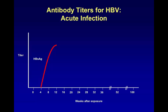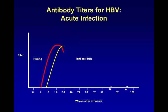What happens with acute hepatitis B infection? About four weeks after infection, we'll start to see a rise in surface antigen, and usually around eight weeks is when jaundice develops. This is generally where the person comes in to the doctor to be seen, and they usually are positive for surface antigen. At the same time, there will be an IgM response and core antibody will rise along with the surface antigen.